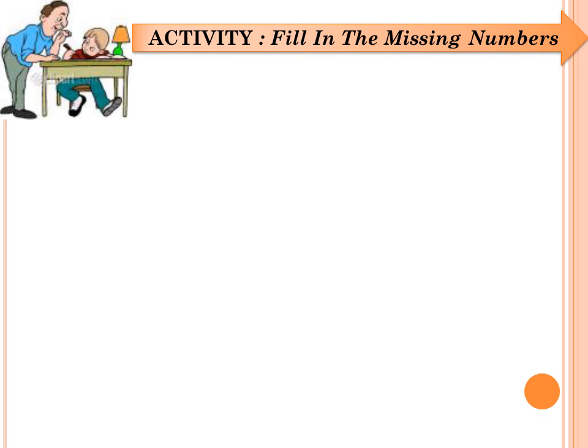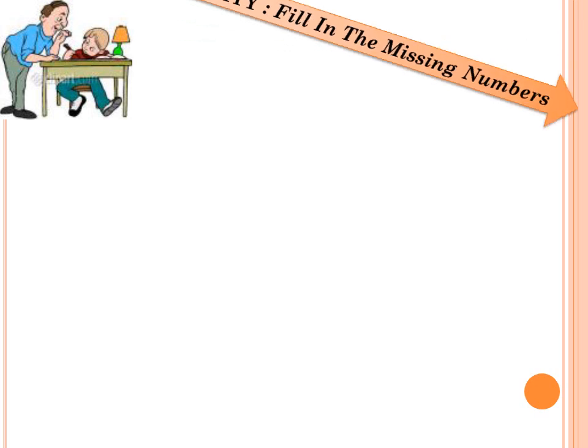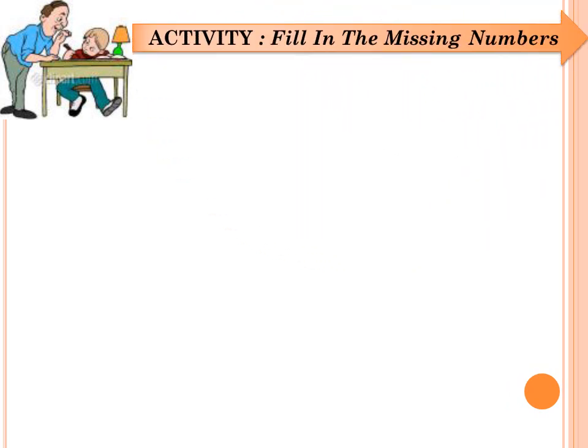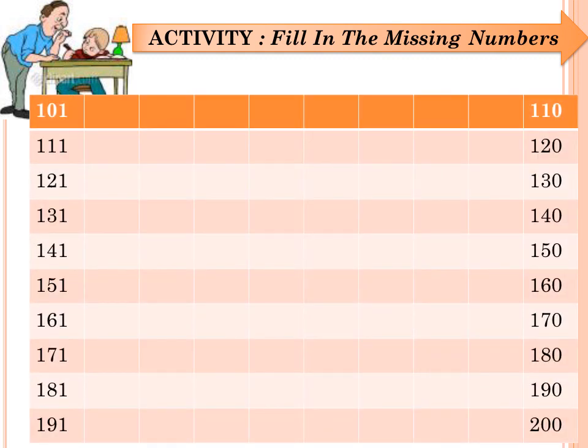We have this activity for this lesson. The instruction is: fill in the missing numbers. The very first number there is 101. What do you think comes next? Did I hear you say 102? Good. Followed by 103, up until you get to the last box before 200. What do you think will be there? I'll give you some minutes to do this activity.